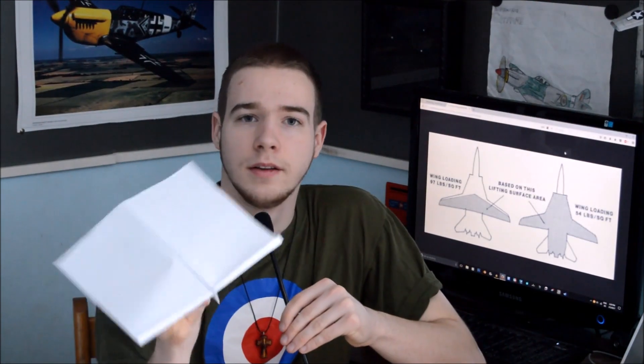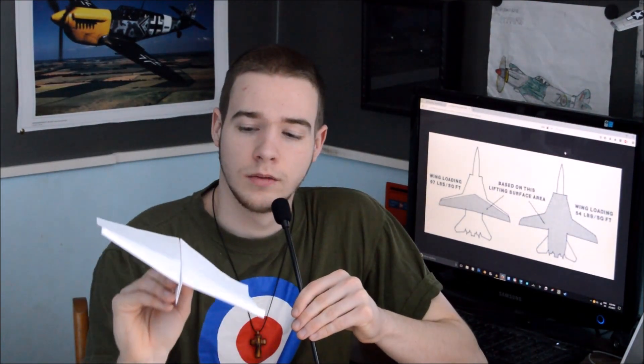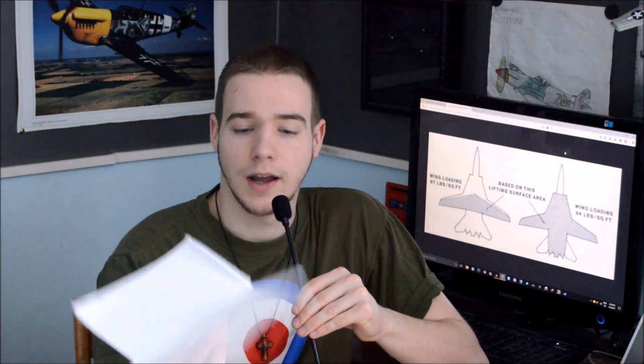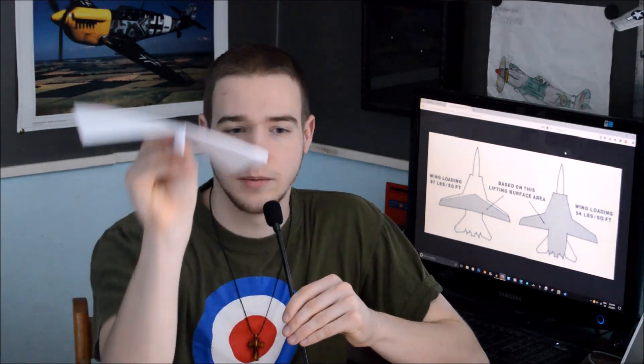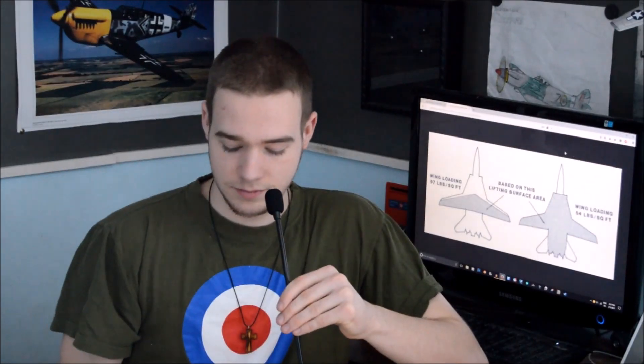For example, this paper airplane has very low wing loading. It's very light, and it's got a ton of wing area. It can flap around all over the place, so it will fly incredibly slow and will be able to maintain that very easily. It just pretty much falls.